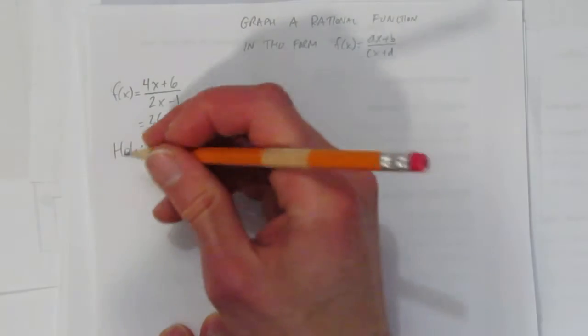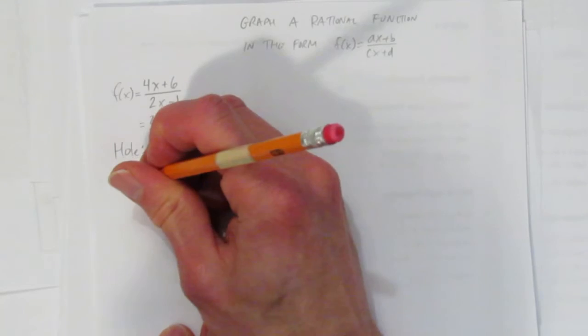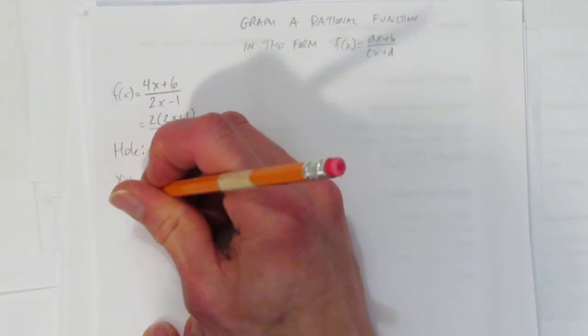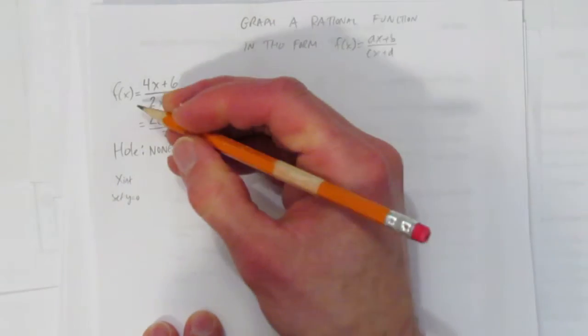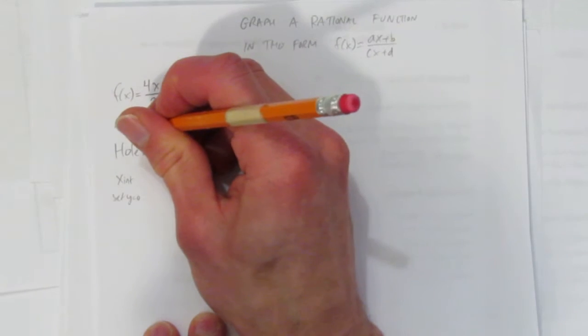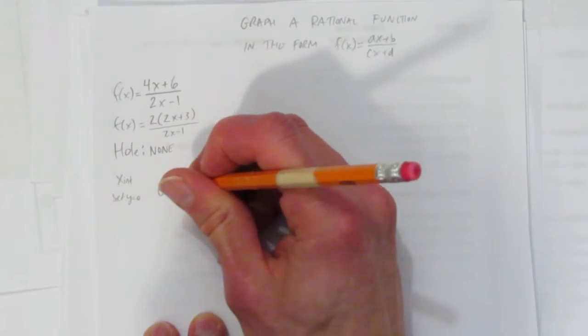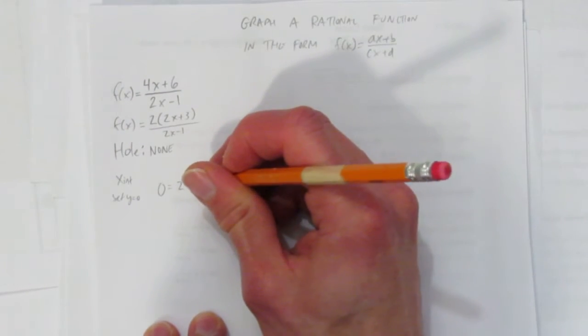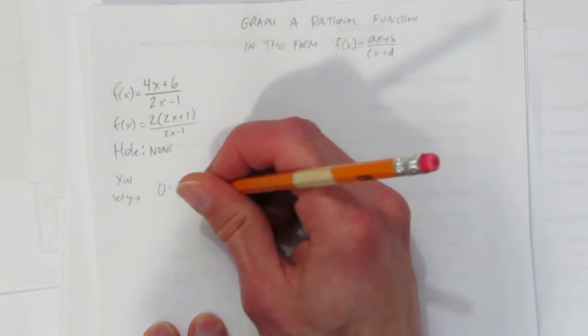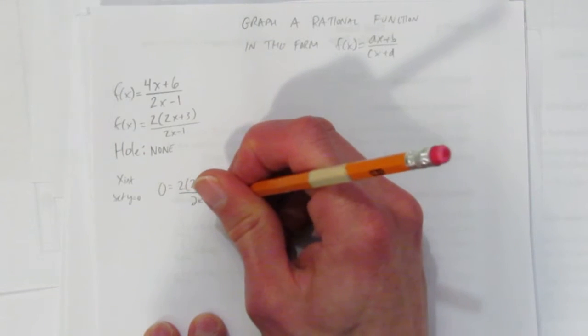What else do we want to look for? Let's start with the x-intercepts. For the x-intercept, you set y=0. Whenever you're finding your x-intercept, y=0. So you get 0 equals 2(2x+3) all over 2x-1. You could use this one. Both are good.